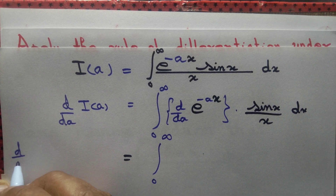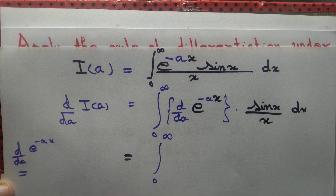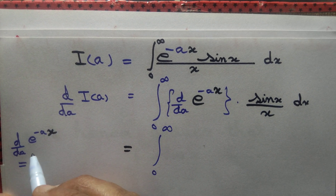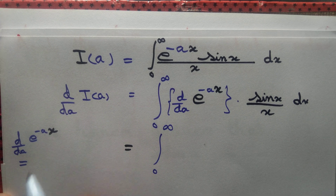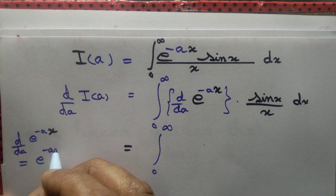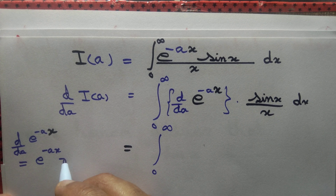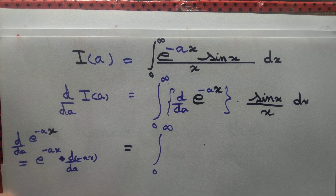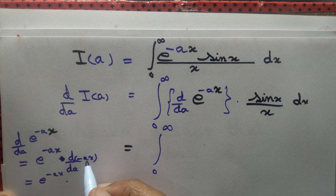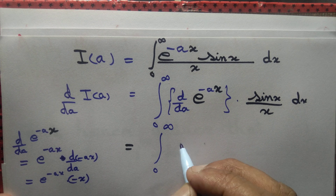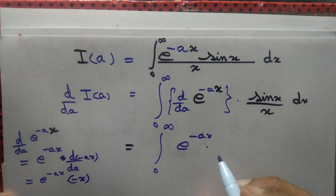Let's do some rough work. d/da of e^(-ax): here we differentiate with respect to a, so x is regarded as constant. d/da of e^(-ax) equals e^(-ax) times the derivative of (−ax) with respect to a. The derivative of −ax with respect to a is −x, so d/da of e^(-ax) equals e^(-ax) times (−x).